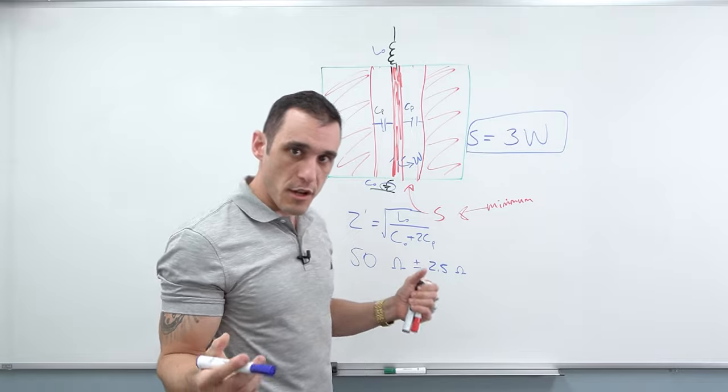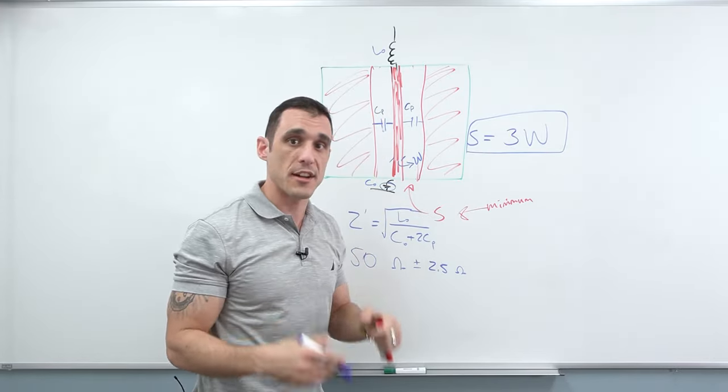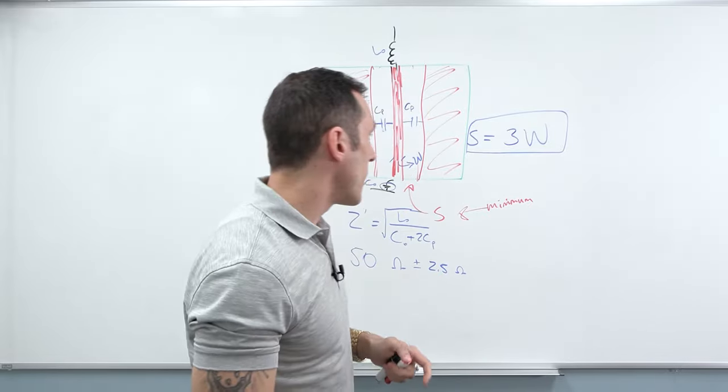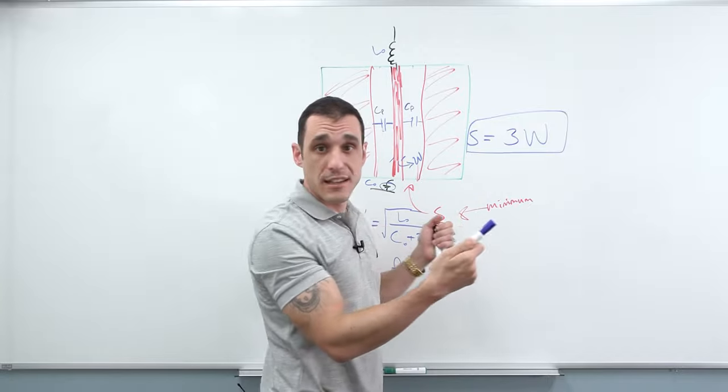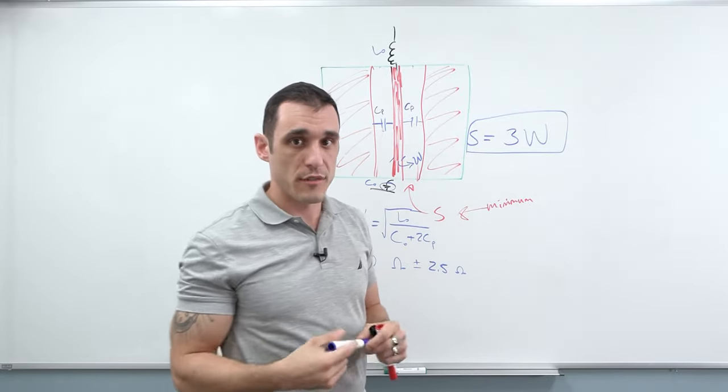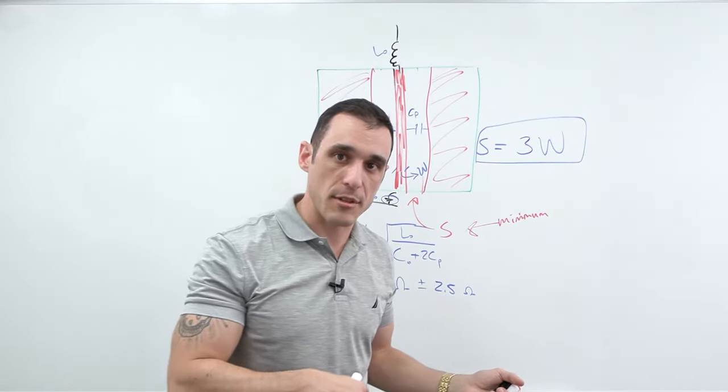Using a field solver, you can actually determine the appropriate spacing — and I'll give you a spoiler alert now. Like most rules of thumb based on spacing, this one can be a little too conservative. So let's look at some simulation results, and I'll show you why. I've published these in a blog on Altium's website. What I'm going to do is walk you through these graphs and explain how they help you determine the appropriate clearance between your trace and your ground pour.